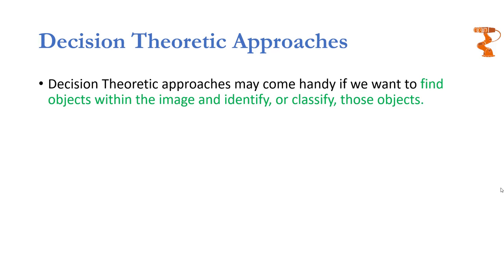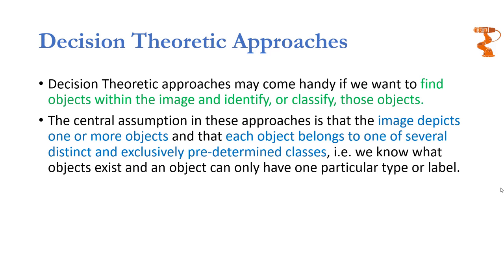The main objective of all pattern recognition approaches is to find any object present in an image, to identify it, and then to classify it as per some predetermined classes. To achieve this objective there are certain assumptions: that the image already contains some object, that you already know what kind of objects are going to appear, and what are the different classes into which we can organize those objects.